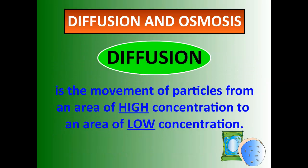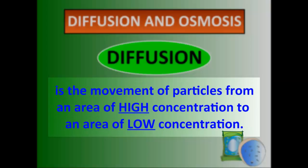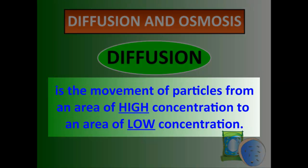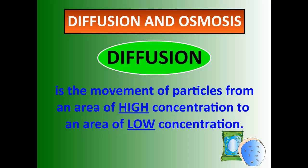Diffusion is the movement of particles from an area of high concentration to an area of low concentration. The area of high concentration would be right by the locker if you spray perfume or body spray, or right by the popcorn poppers at the theater. As you travel away from those points, the concentration decreases, and particles will always travel from an area of high concentration to an area of low concentration.